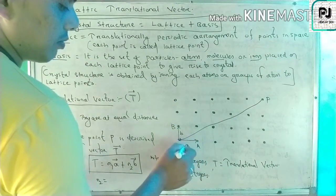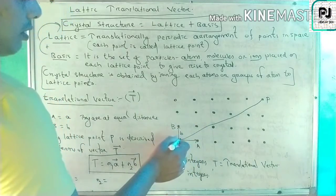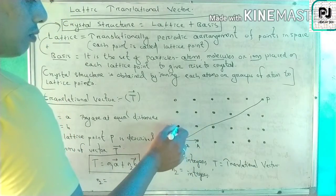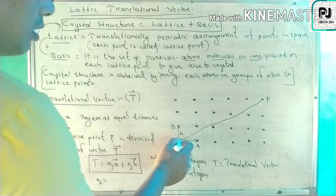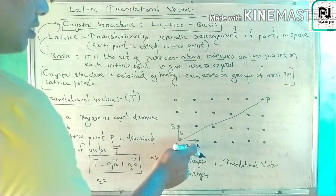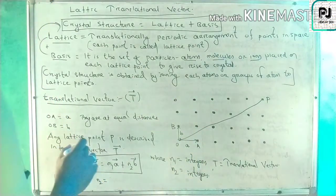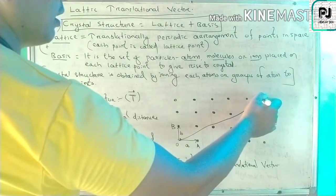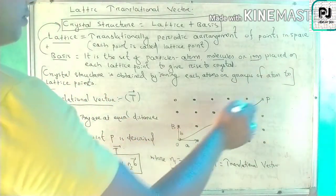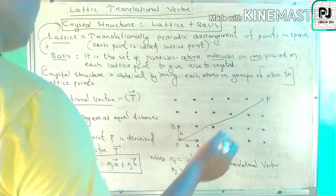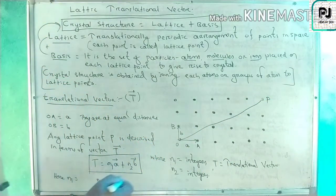OA and OB are taken such that the distance from O to A and from O to B are equal. OA is from the origin point O to point A, and OB is from O to point B. They are at equal distance. A is the distance vector a and B is the distance vector b. Any lattice point P is described in terms of vector T.